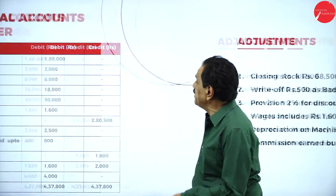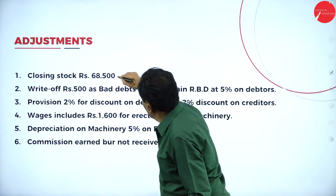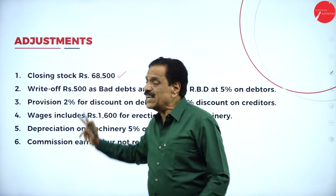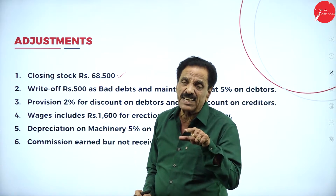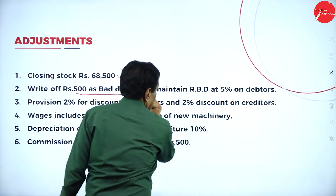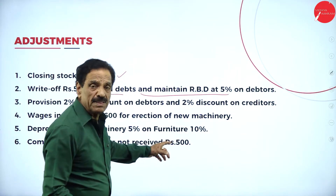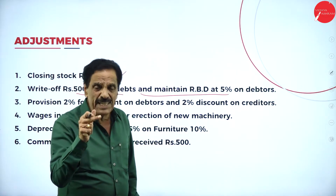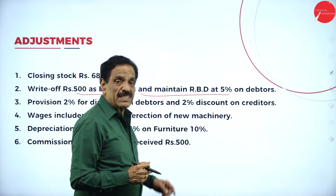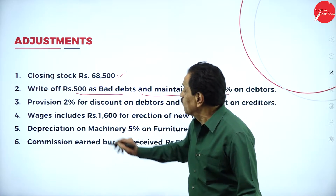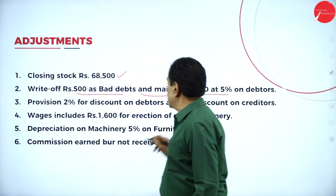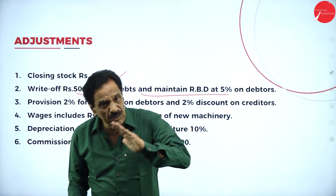Regarding the adjustments: closing stock — all adjustments should appear twice. It will come in the trading account on the credit side, and on the assets side of the balance sheet. Write off 500 as bad debt and maintain RBD at 5%. The formula is: bad debt plus new RBD minus old RBD. There is further bad debt as well. Provision of 2% for discount on debtor — we have given discount on the debtor also.